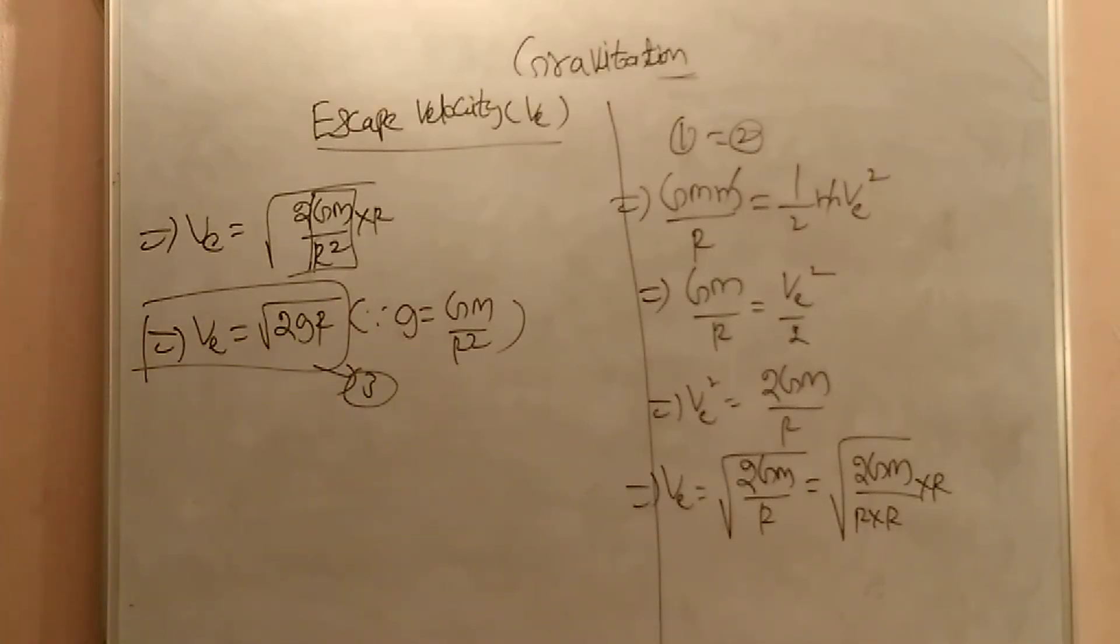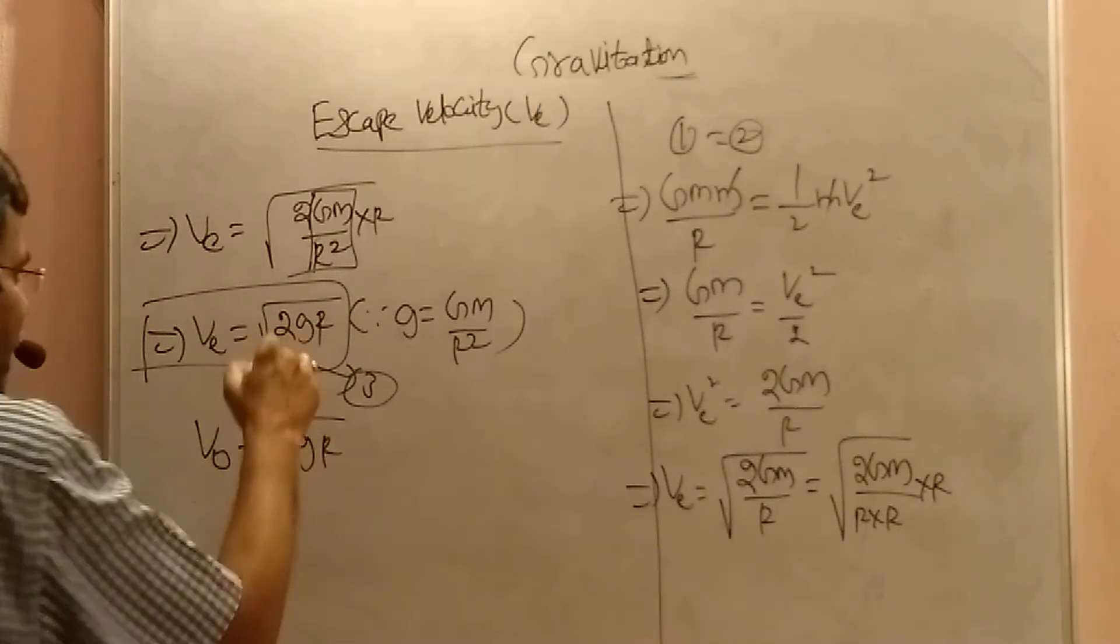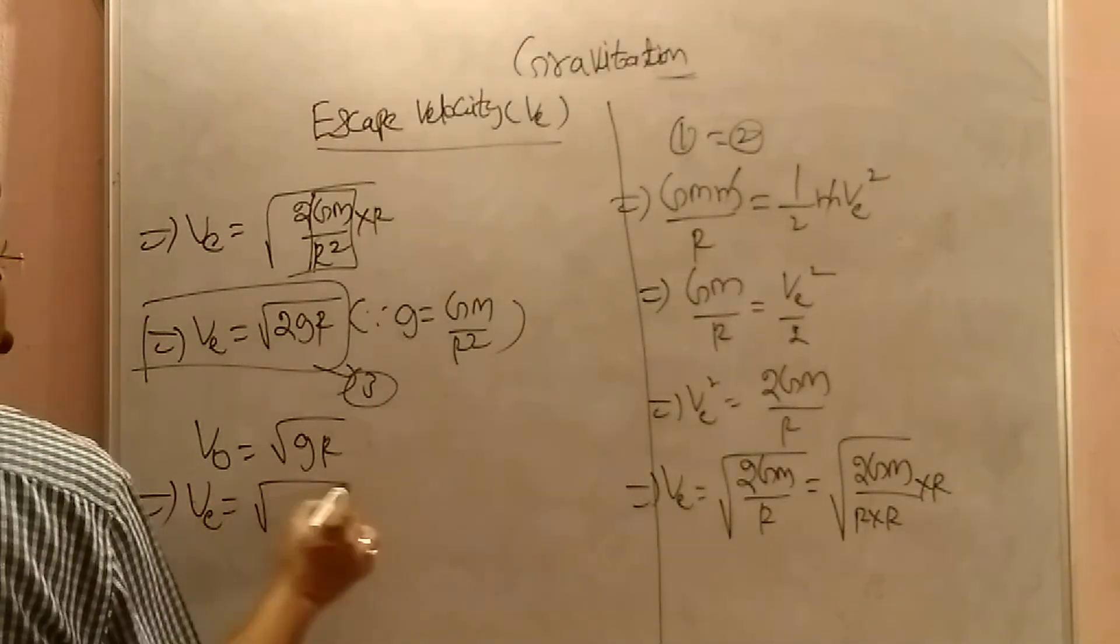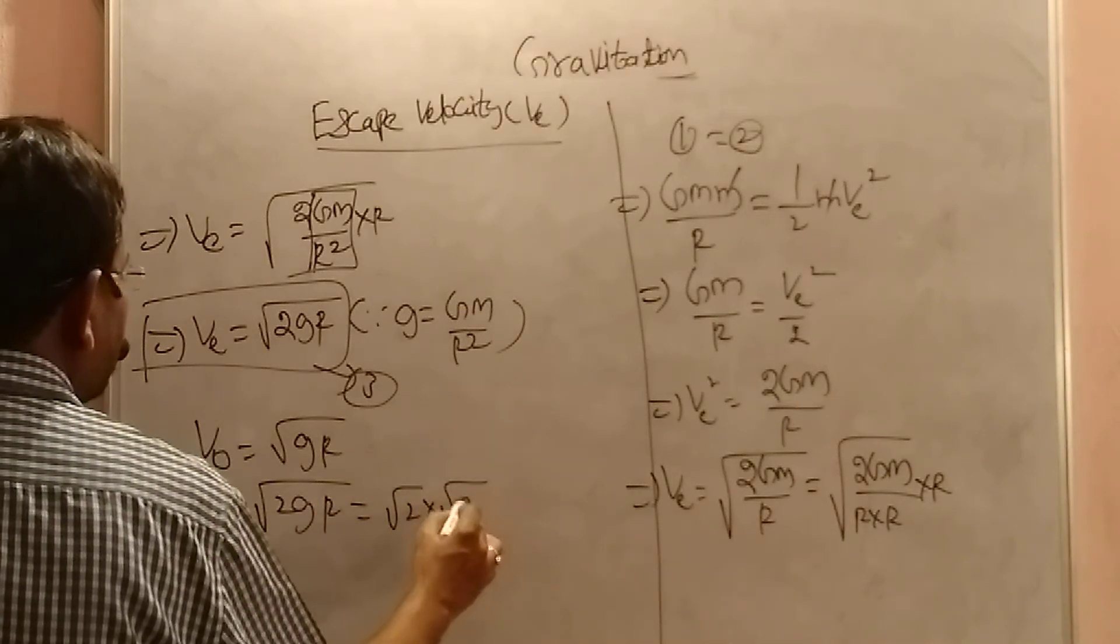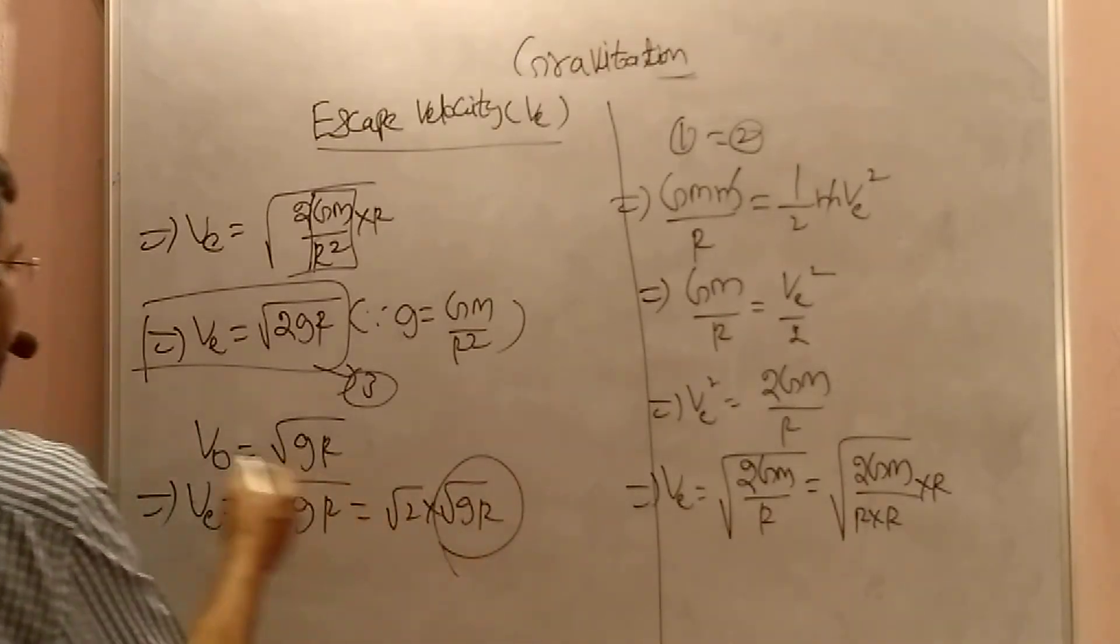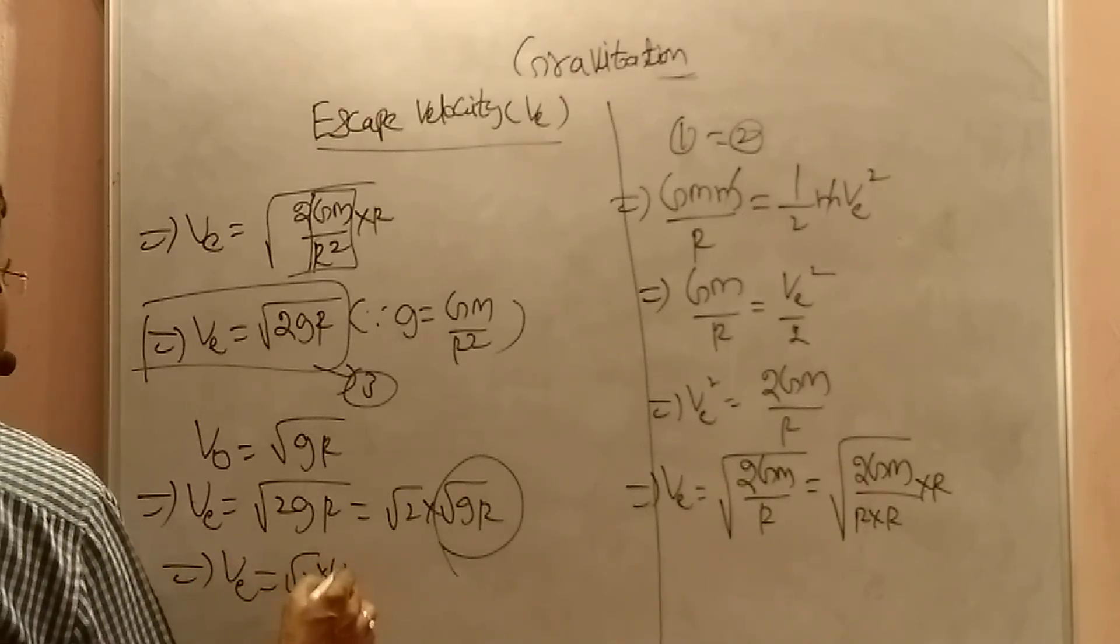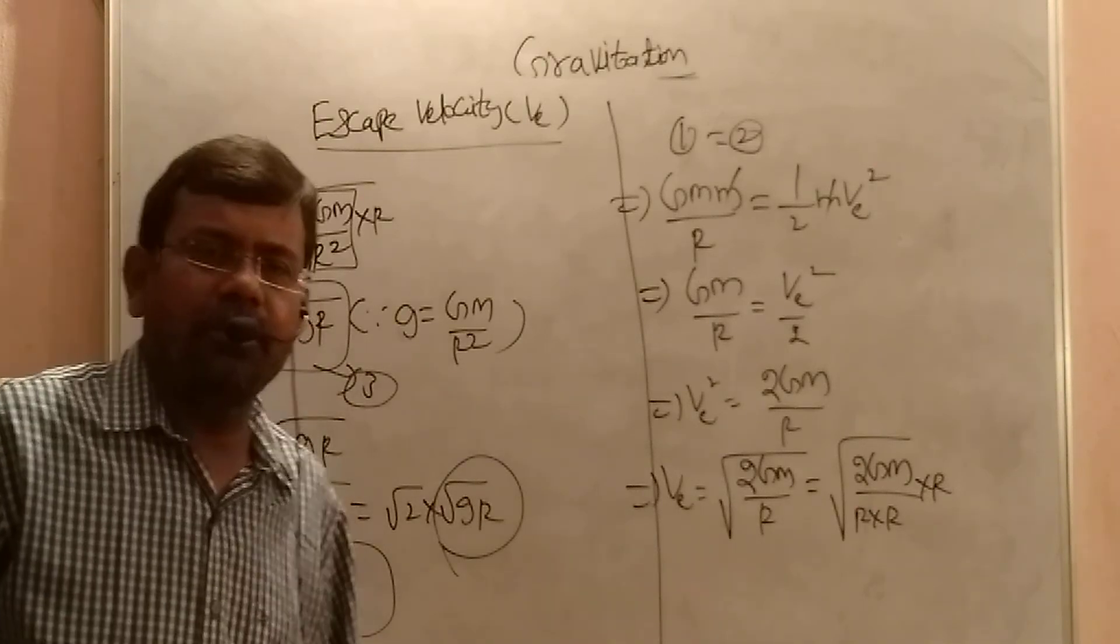So what is the form of escape velocity? Root 2 g r. But we know orbital velocity, that is equal to root g r. Now, I am giving the relation between these two. So v equal to root 2 g r, I am writing as root 2 into root g r. Root g r I am writing as v_0. So v equal to root 2 into v_0. So that is the relation between escape velocity and orbital velocity.